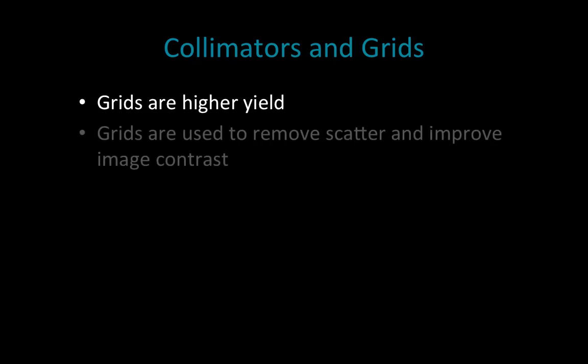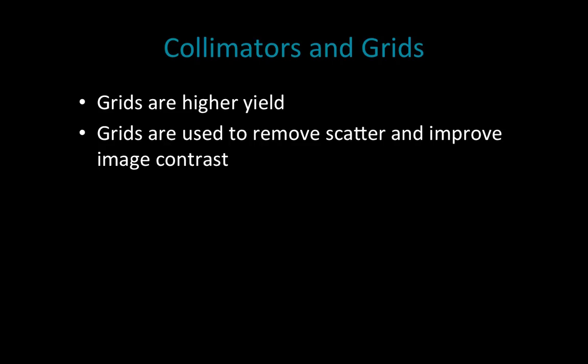Moving on to grids — why do we use grids? We use grids to reduce scatter and improve our image contrast. However, like everything in radiology, there is a trade-off: if we are reducing scatter we're also reducing the amount of x-rays, and that will cause our x-ray tube to shoot more x-rays in order to achieve the final image quality we want.